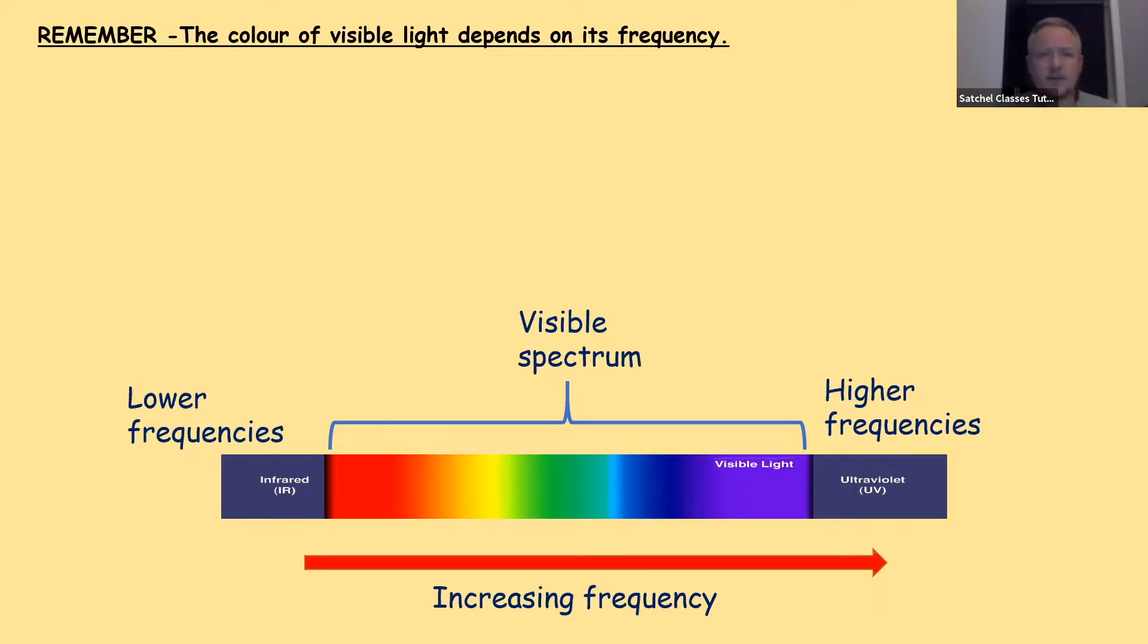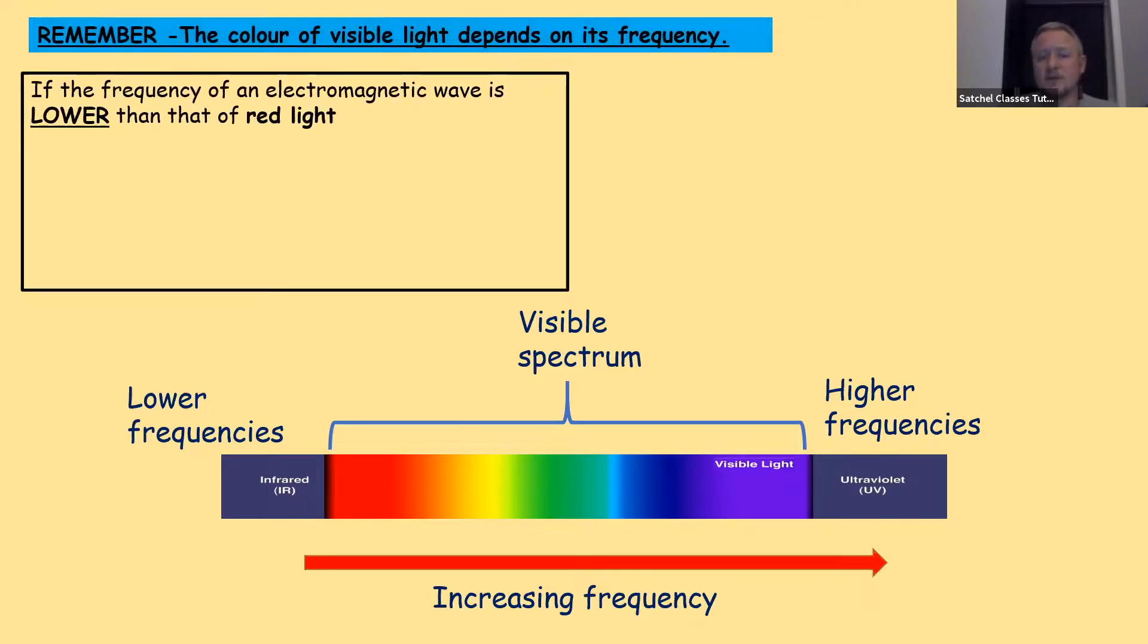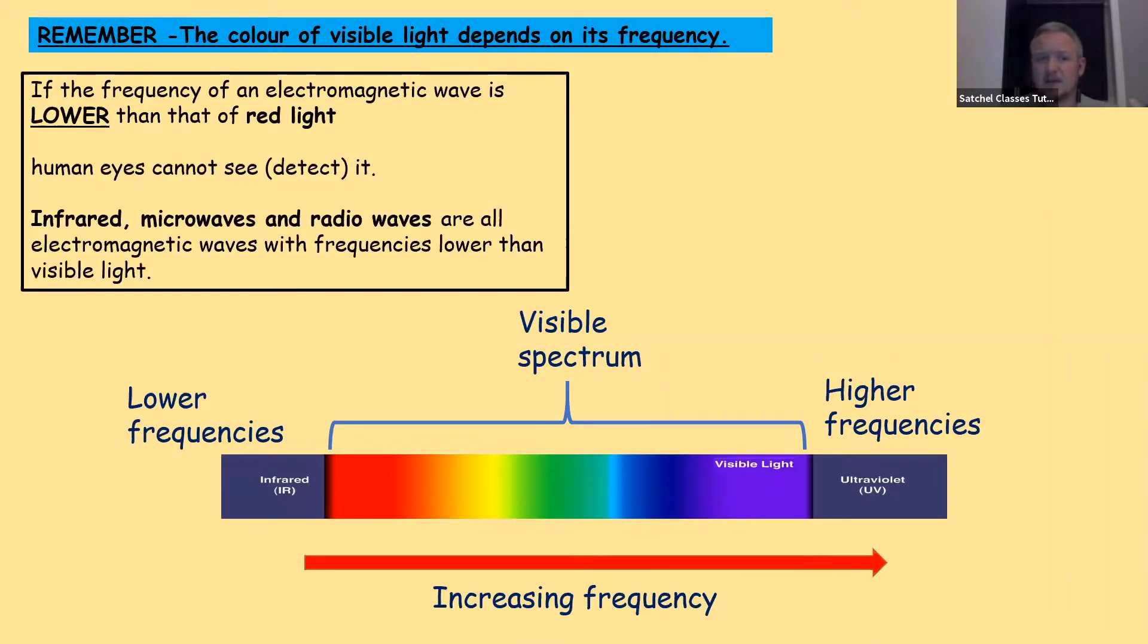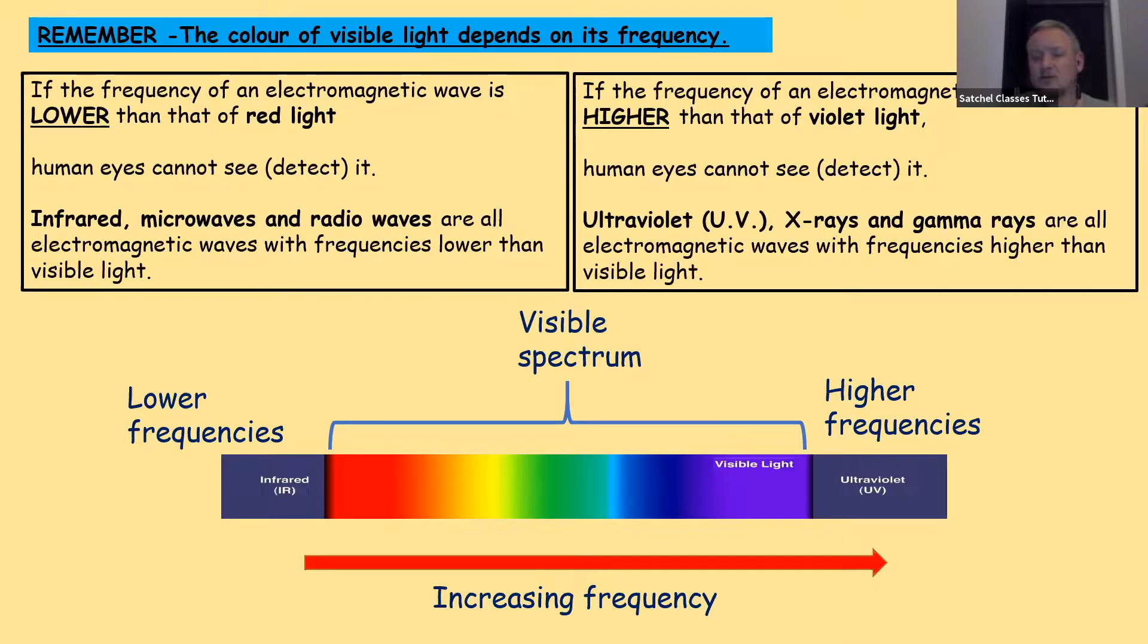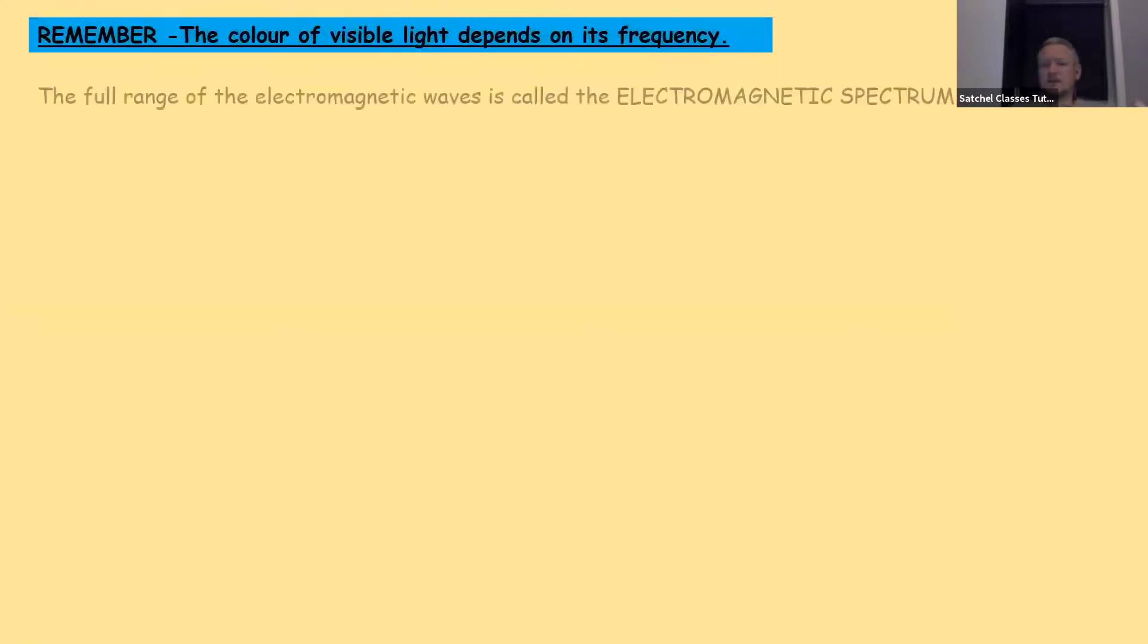One thing we've got to remember from that last couple of slides: the colour of visible light depends on its frequency, so the frequency of light determines the colour. If the frequency of an electromagnetic wave is lower than that of red light, human eyes can't see it, we can't detect it with our eyes. Infrared, microwaves, and radio waves are all electromagnetic waves, but their frequencies are lower than visible light, which is why we can't see them with our eyes. On the other side of it, if the frequency of an electromagnetic wave is higher than that of violet light, again, human eyes cannot see it or detect it. Ultraviolet, x-rays, and gamma rays are all electromagnetic waves with frequencies that are higher than visible light.